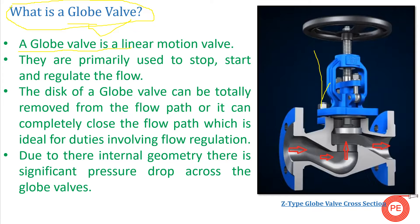So what is the function of these globe valves? These globe valves are primarily used to stop, start, and regulate flow. They are basically used where we need to regulate the flow and also require the start and stop of flow depending upon the process requirements.